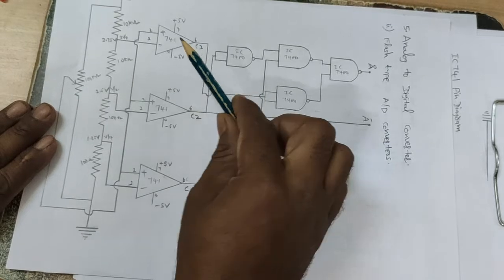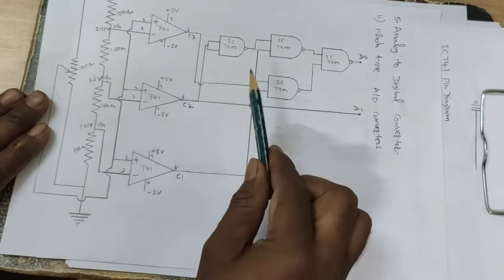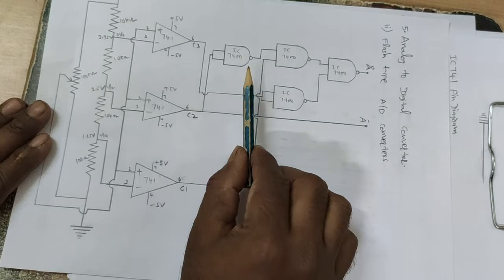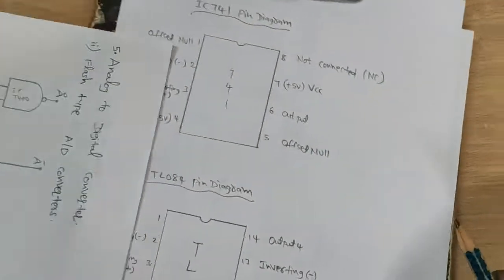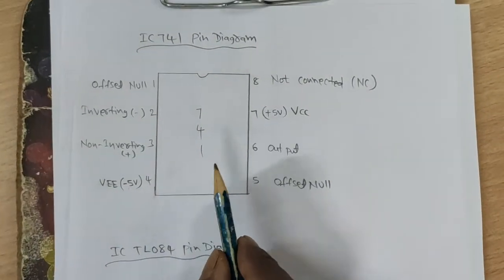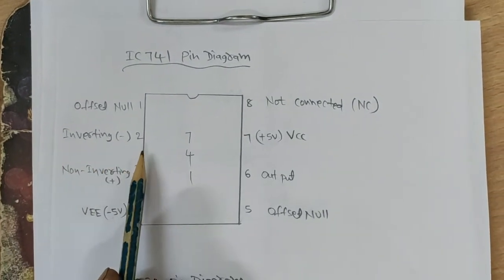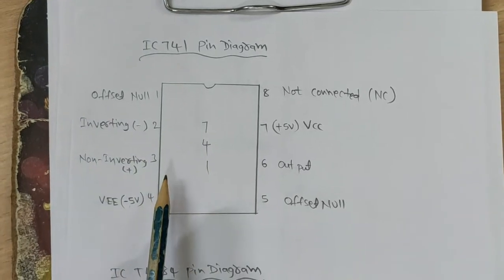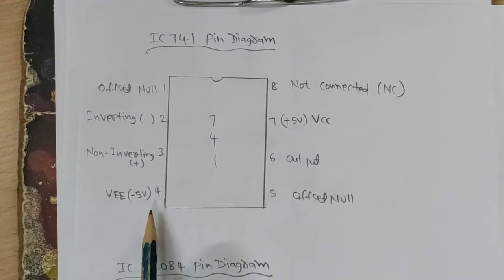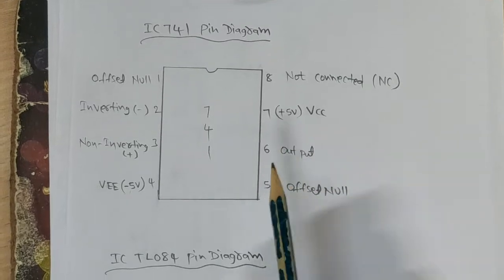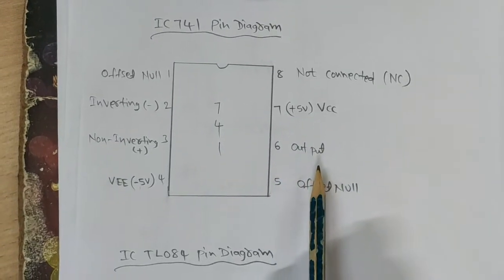Here we are using 741 op-amps and the 7400 NAND gate. This is the pin configuration for the 741 IC. The inverting input is the 2nd pin, non-inverting input is the 3rd pin, 4th pin is minus 5 volts, 7th pin is plus 5 volts, and pin 6 is the output.